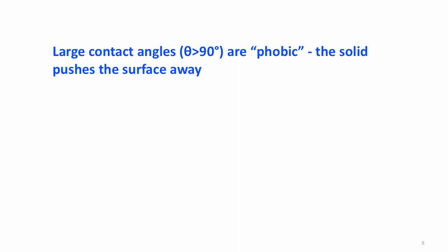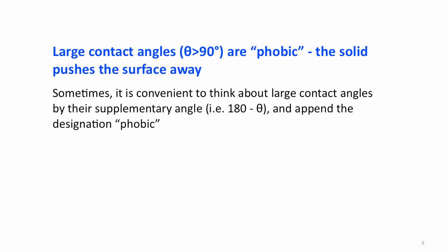Large contact angles are often called phobic — that is, the solid pushes the interface away. Sometimes it's convenient to think about these large angles by their supplementary angle, that is, 180 degrees minus theta, and we append the designation 'phobic' so we know it pushes away — meaning the interface is pushed down along the solid. So in the previous case, the air-mercury-glass system has a phobic angle of 40 degrees, which is 180 minus 140.